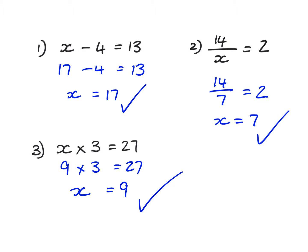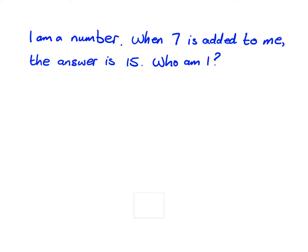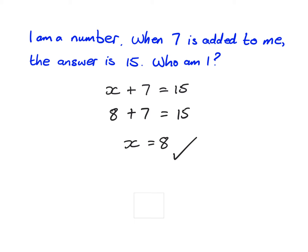We can also have word problems, like: 'I am a number. When seven is added to me the answer is fifteen. Who am I?' I'm going to use algebra to solve this. I'll write it as: x plus seven equals fifteen. Simply, eight plus seven equals fifteen, therefore the value of x must be eight.